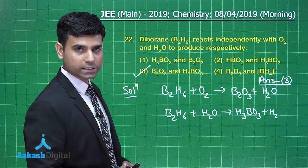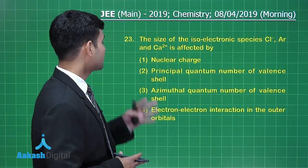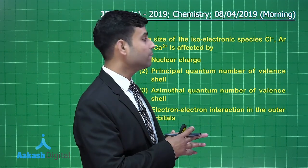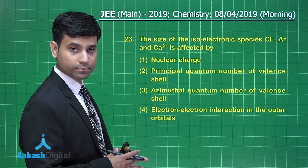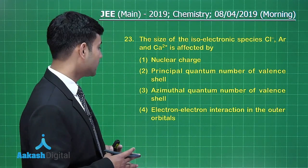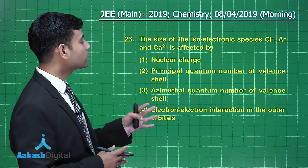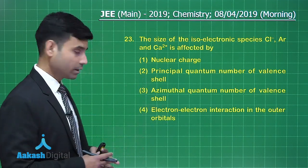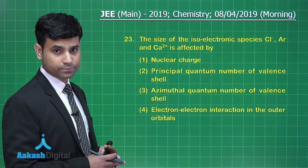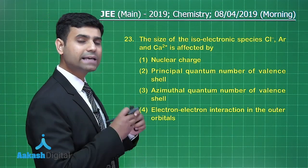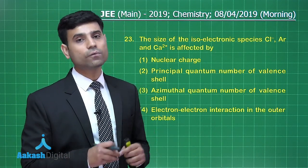The next question says: the size of the isoelectronic species Cl⁻, Argon, and Ca²⁺ is affected by — option 1: nuclear charge, option 2: principal quantum number of valence shell, option 3: azimuthal quantum number of valence shell, option 4: electron-electron interaction in the outer orbital. Isoelectronic species have the same number of electrons.